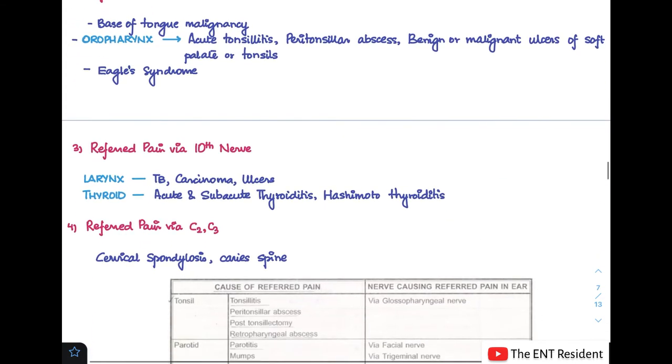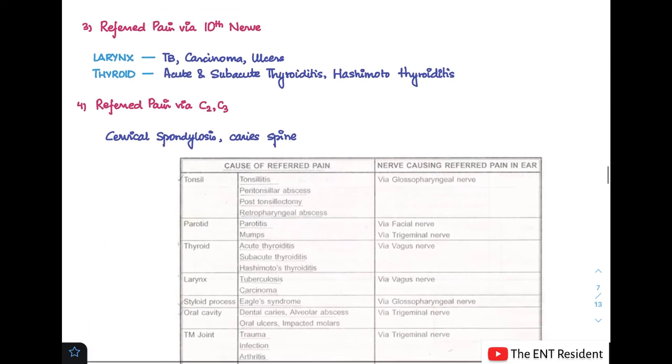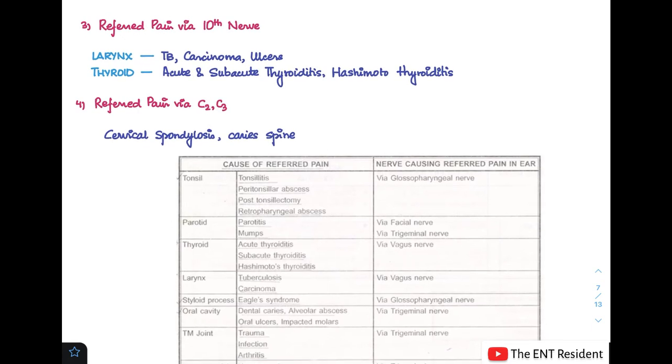Next comes referred pain via the 10th cranial nerve. These causes include laryngeal causes and thyroid causes. Laryngeal causes can be TB, carcinomas, and ulcers. Thyroid causes can be acute and subacute thyroiditis and Hashimoto thyroiditis. These are causing referred pain via the 10th cranial nerve or the vagus nerve.